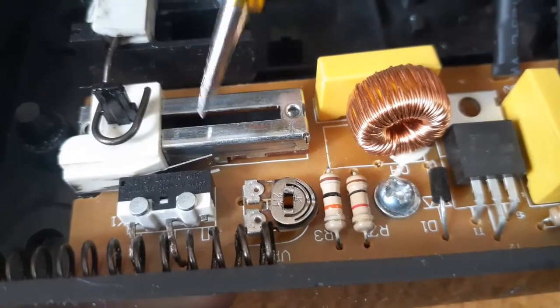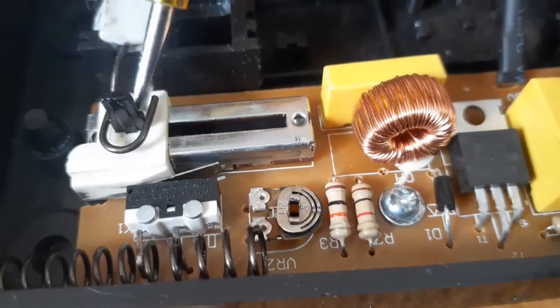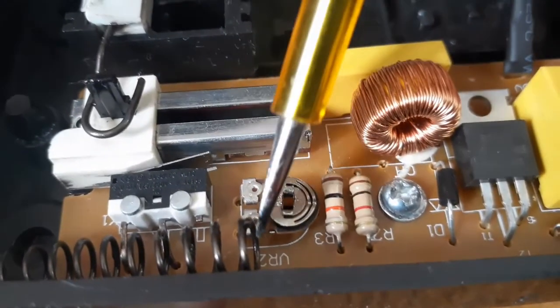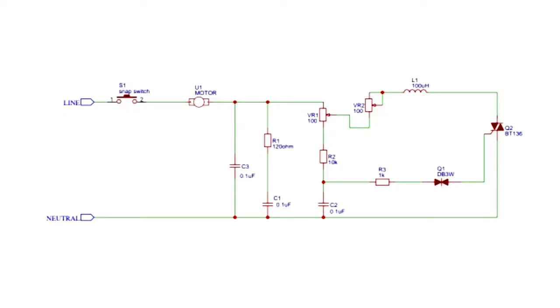The important components are the potentiometer and the snap switches. So now let's head on to the schematic and understand the functioning of each component. So let's dig deeper into the functioning of the circuit.